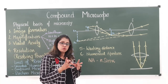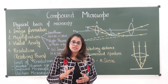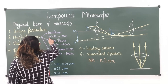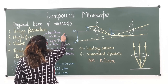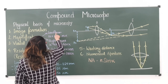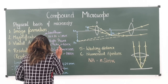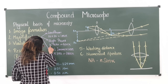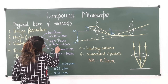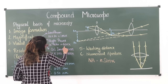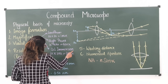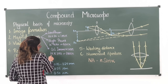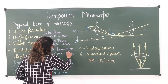The examiner may also ask about magnification. When using the low power objective (10x), total magnification is 10 × 10 = 100x. With the high power objective (40x), it is 10 × 40 = 400x. With the oil immersion lens (100x), total magnification is 10 × 100 = 1000x.